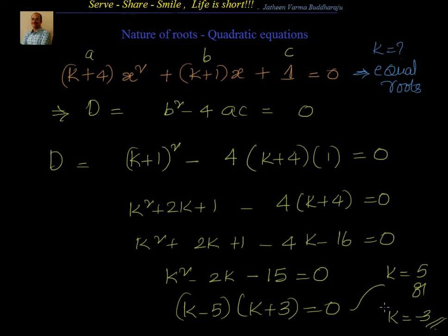We will try some more examples on nature of roots in the coming session. To summarize: given x = (−b ± √(b² − 4ac)) / 2a, the key factor is the discriminant b² − 4ac. If D > 0, roots are real and distinct. If D = 0, roots are real and equal. If D < 0, roots are imaginary. That's why it's called the discriminant. Thanks for your time and support. Bye for now.